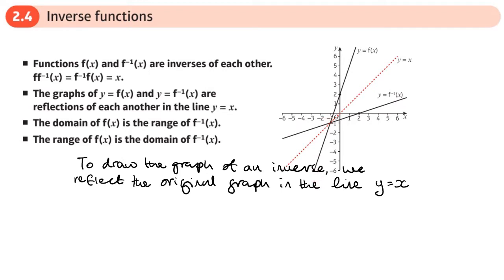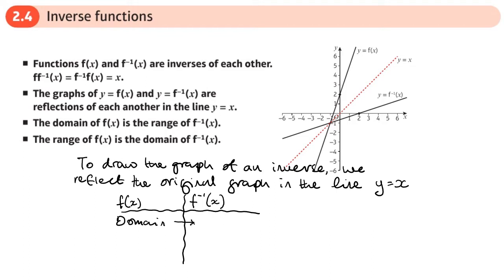Because the x and y's swap around, if you have your original function and its inverse — remember it's f⁻¹ — the domain of the original function becomes the range of the inverse, and the range of the original becomes the domain of the inverse. So if a question asks for the domain of the inverse, it's easier to find the range of the original function.